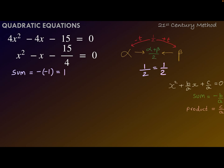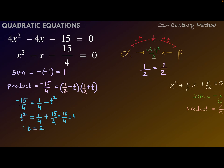The product of the roots is the constant term -15/4, and that can also be written as (1/2 - t)(1/2 + t). Solving this equation we get t = 2, so the roots are 1/2 - 2 or 1/2 + 2, which gives -3/2 or +5/2.